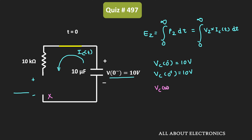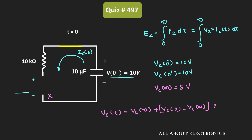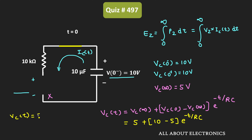We can say that Vc will equal 5V at steady state. From this, we can find the equation for the voltage across the capacitor. We know that Vc(t) equals Vc(∞) plus [Vc(0) minus Vc(∞)] times e to the power minus T divided by RC. Here Vc(∞) equals 5V and Vc(0) equals 10V. That gives us 5 plus 5 times e to the power minus T divided by RC.